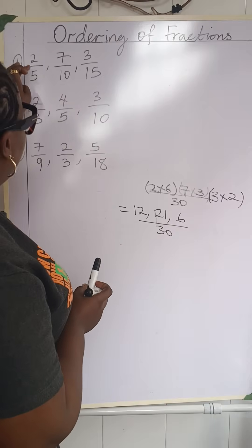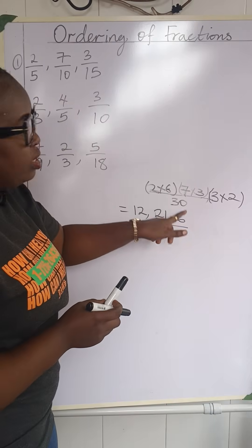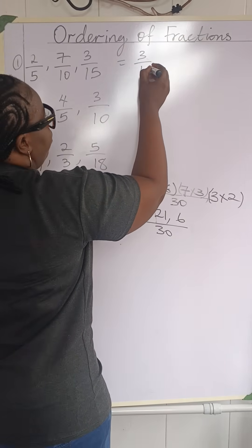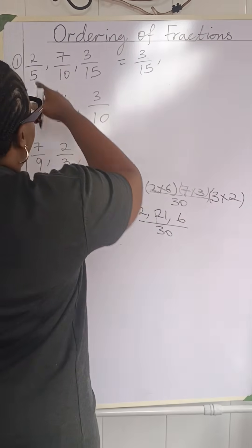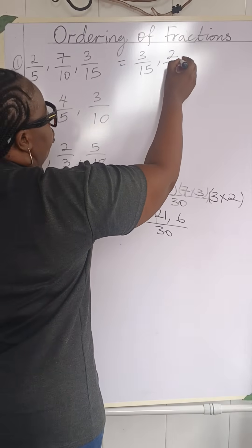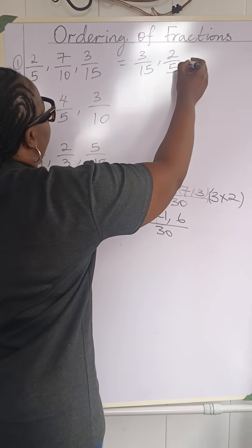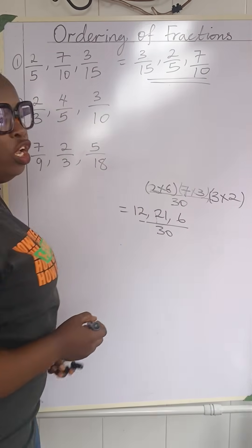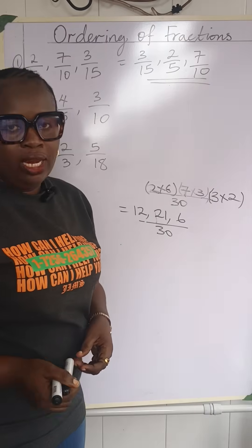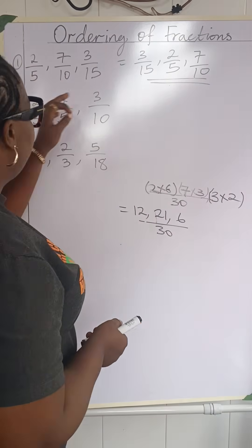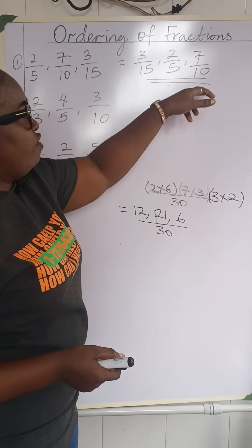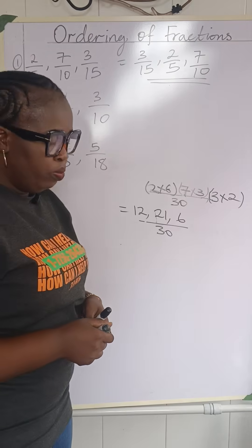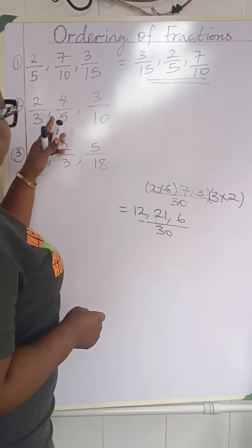Now let's compare back to the original fractions. The smallest numerator is 6, which corresponds to 3 over 15. Next is 12, which is 2 over 5. And lastly 21, which is 7 over 10. So ordering from smallest to biggest in ascending order, the final answer is: 3 over 15, 2 over 5, and 7 over 10.